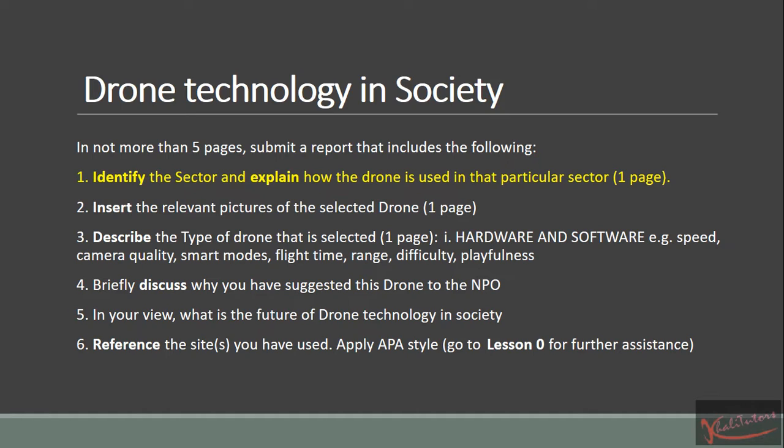Number two: you need to insert the relevant pictures of the selected drone. Number three: describe the type of drone selected — you need to address hardware and software, for example speed, camera quality, smart modes, flight time, range, and difficulty. Number four: briefly discuss why you suggested this drone to the NPO. Number five: in your view, what is the future of drone technology in society?